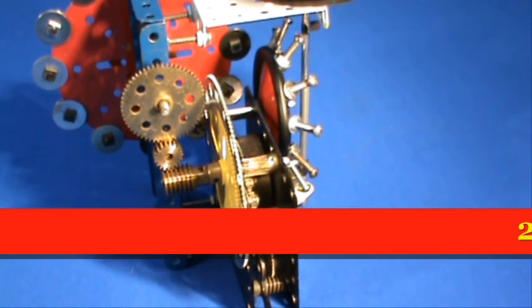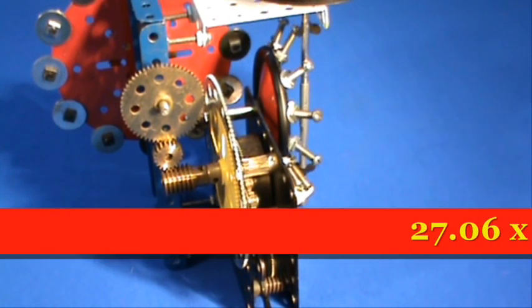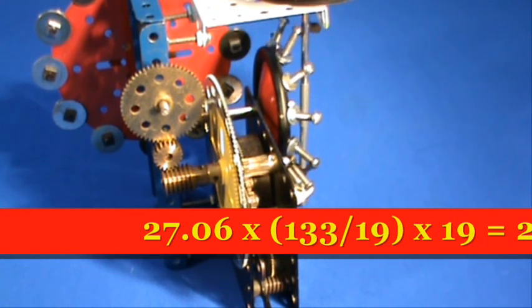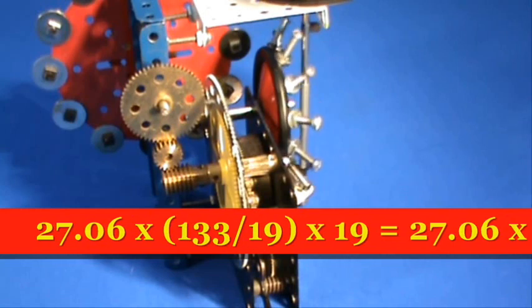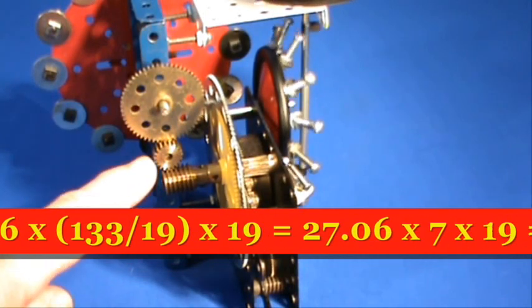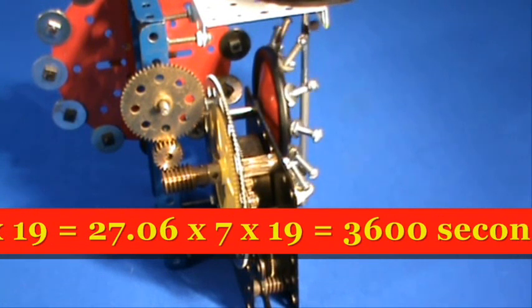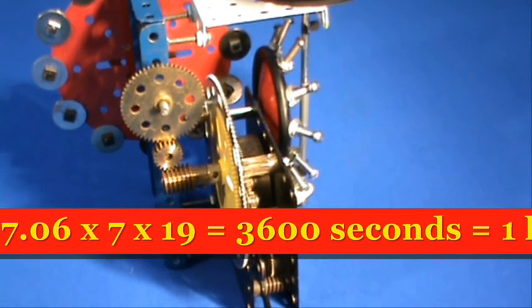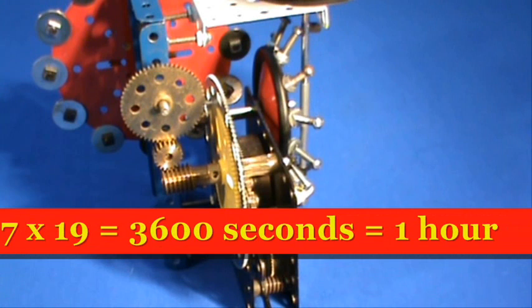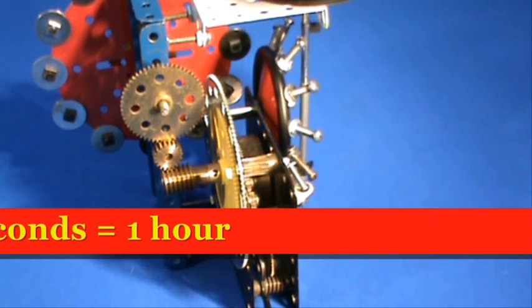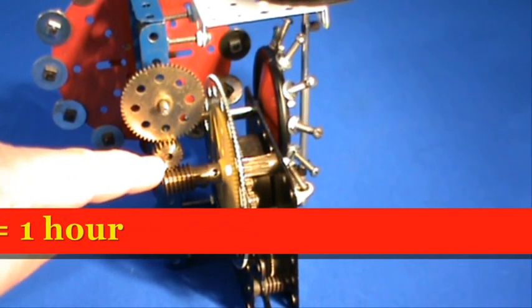The escapement wheel turns once every 27.06 seconds. That gets reduced by 7 to 1 using the large gear with a 19 tooth pinion behind it. Then by a further 19 to 1 using the pinion above it here. 27.06 times 7 times 19 comes out at 3600 seconds which is exactly the duration of one hour from this shaft here.